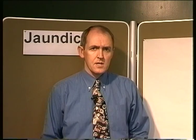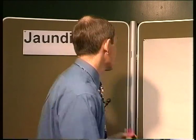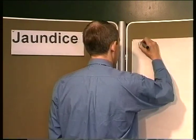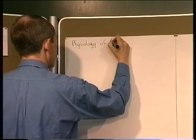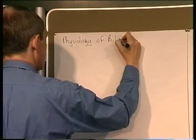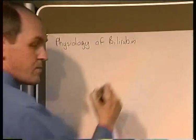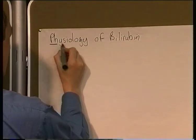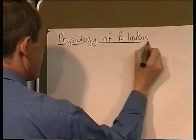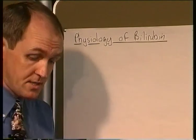As usual in trying to understand abnormal conditions, it's essential to have a reasonable grasp of the physiology first. So what we're going to do now is look at the normal physiology, and it's helpful if you build up the diagram with me. What we're looking at is the physiology of bilirubin, which is the pigment found in the blood in excess when a patient is jaundiced.